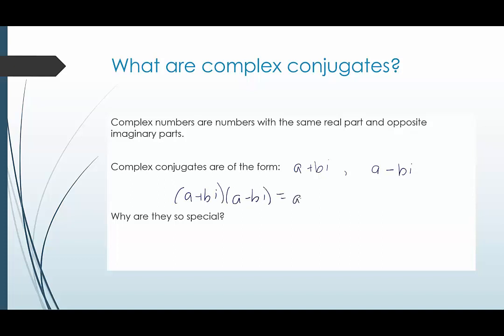That would be a times a is a squared. A times negative bi would be negative abi. Bi times a would be positive abi. And positive bi times negative bi would be minus b squared i squared.